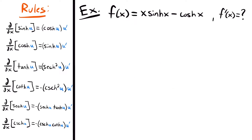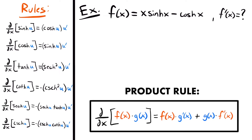For our next example, f of x is equal to x times hyperbolic sine minus hyperbolic cosine, and we want to find f prime. To take the derivative, we need the derivative rules for hyperbolic sine and hyperbolic cosine. Notice that the first term is a product of two functions — x times hyperbolic sine of x — so we are going to need to use the product rule for derivatives.